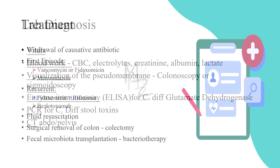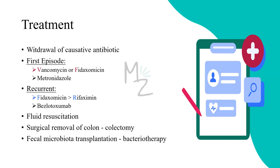Treatment: first, remove the causative antibiotic — for example, stop clindamycin. For the first episode, use vancomycin or fidaxomicin (both oral) along with oral metronidazole, which is effective in the first episode. A useful mnemonic: 'Very First Episode' — V for vancomycin, F for fidaxomicin, and both F and E stand for first episode.